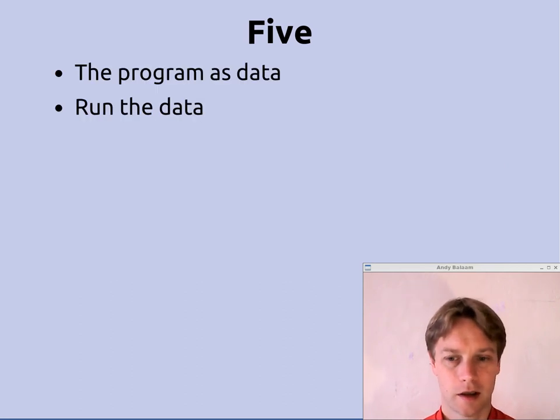So the way that I would express that is, it's the program as data, and then run the data. And what I haven't put there is that that data contains a reference to itself. And that's how you get the kind of doubleness that you need in a quine of the program as data and the program.